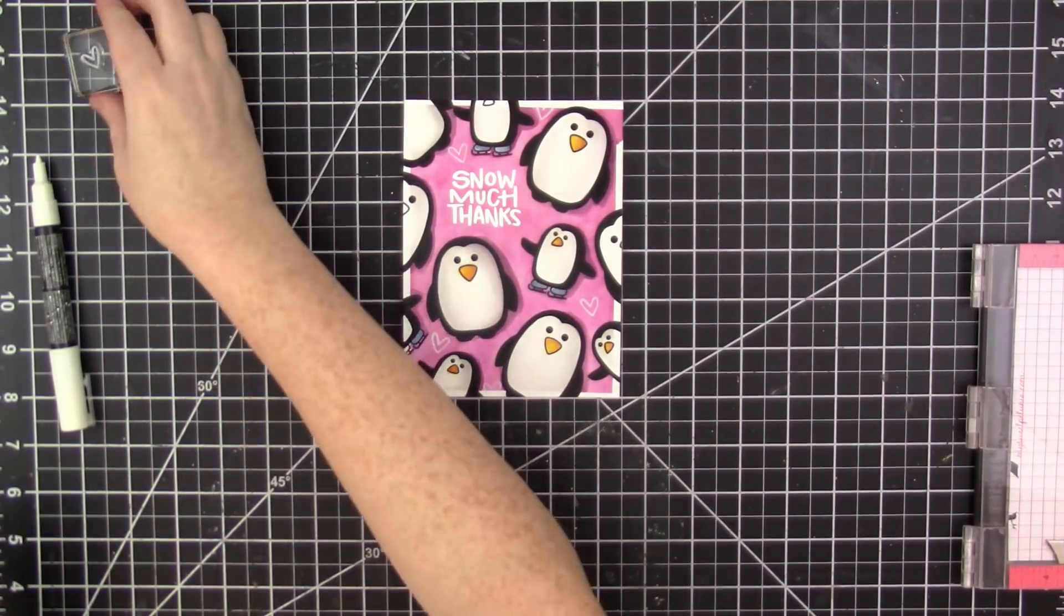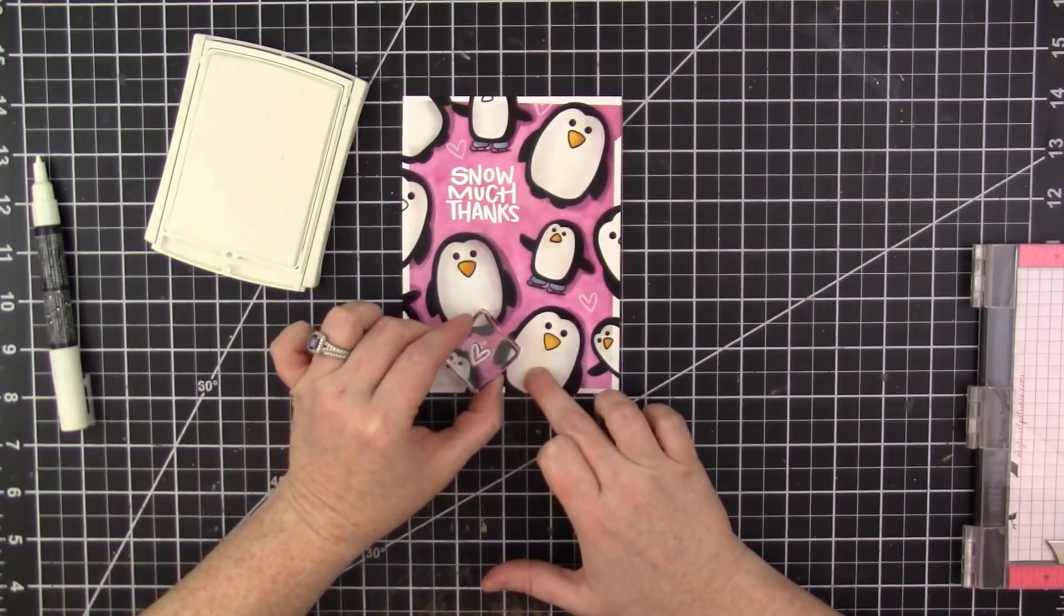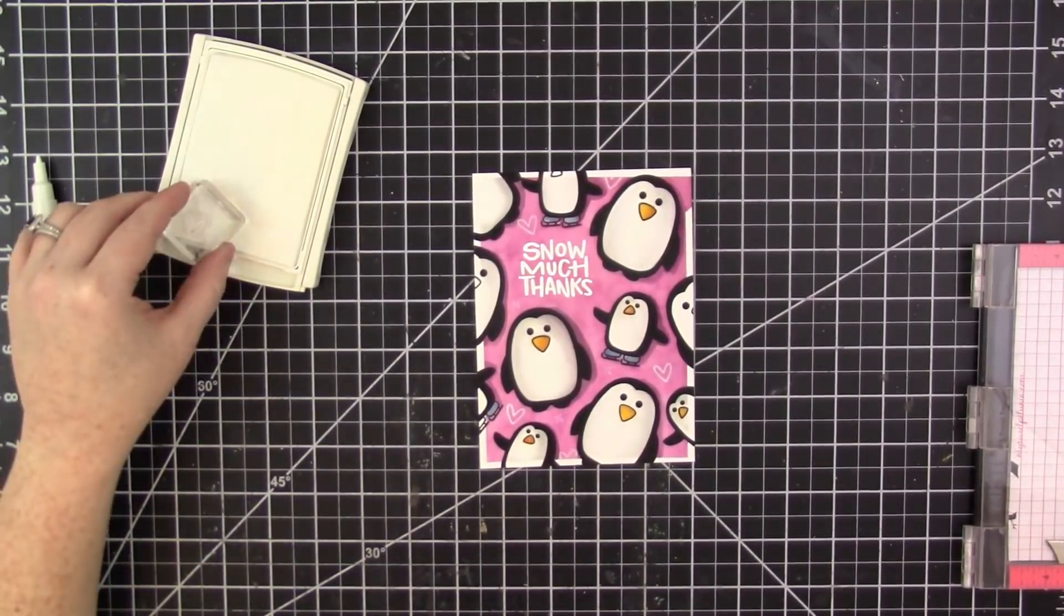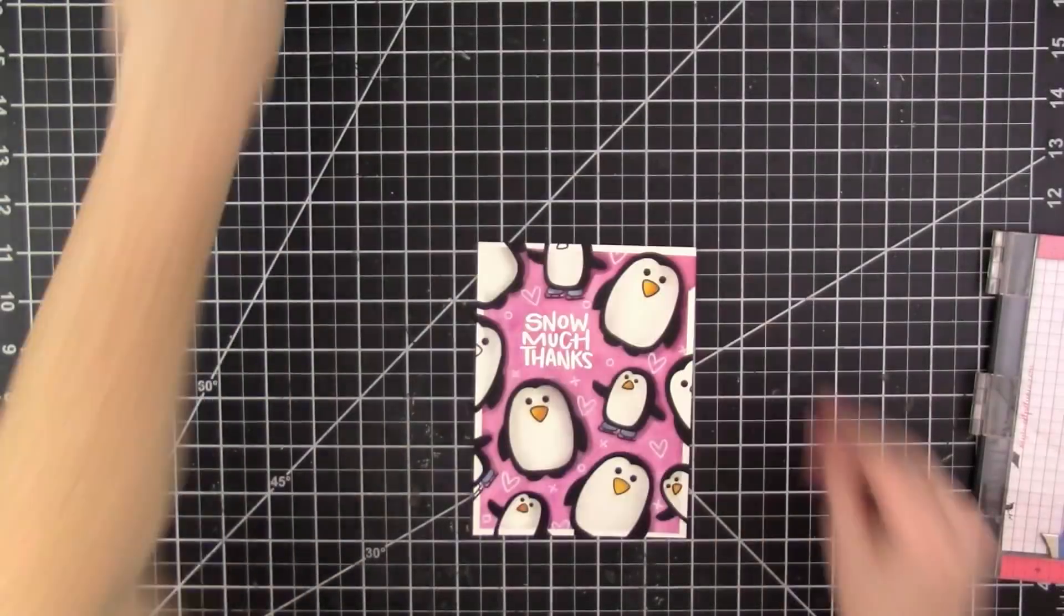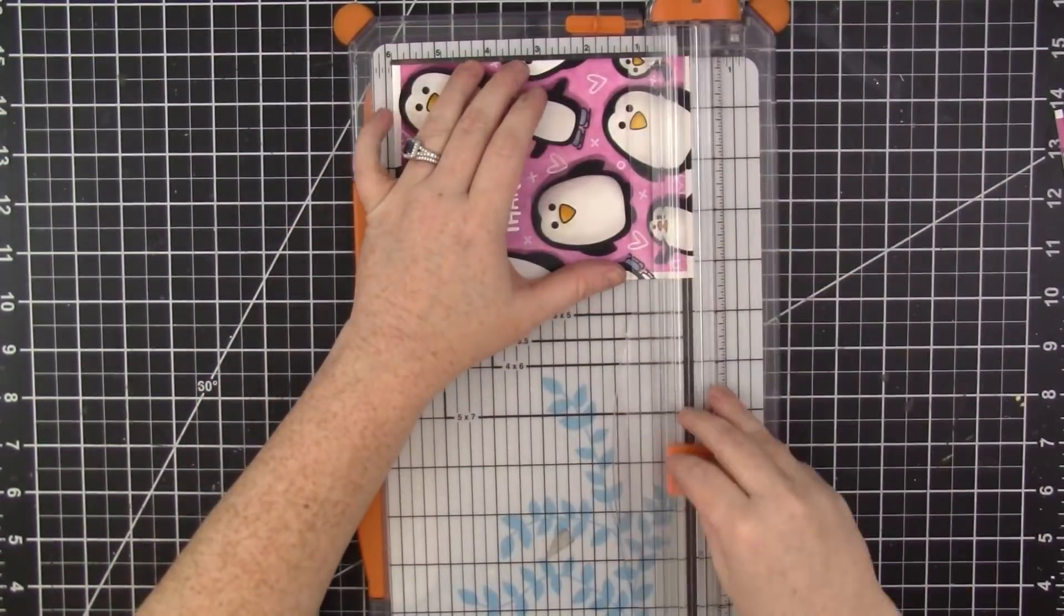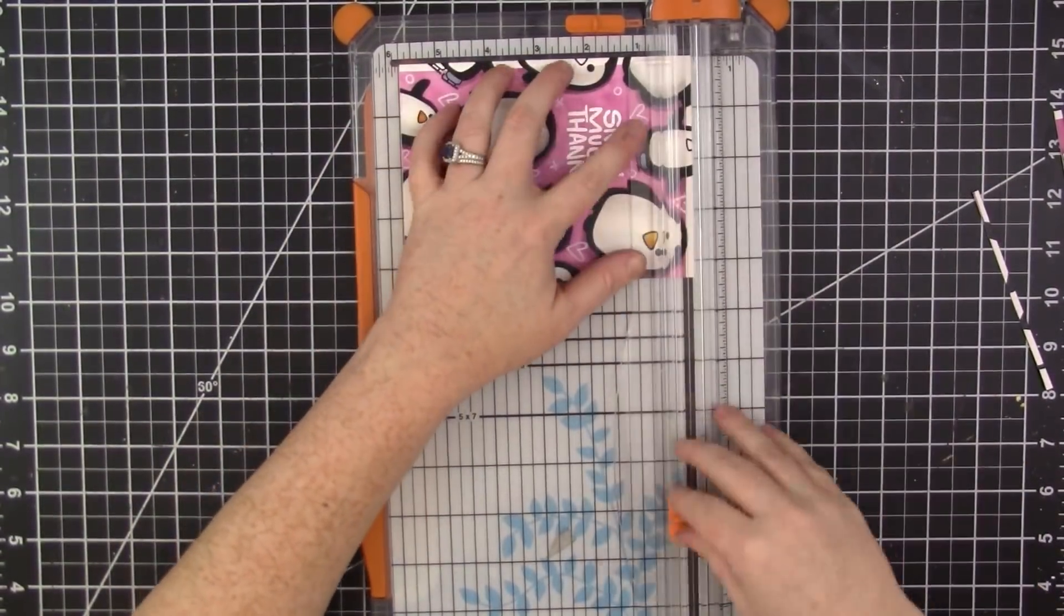So I'm going to continue stamping these little elements between the penguins. And I probably overthink the placement a little too much, it really doesn't matter. I'm just adding them in randomly so that it just adds more fullness to the card. Then I'm going to use my heat tool just to make sure that all the paint is completely dry.